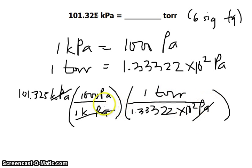Pascal cancels out, leaving us with the unit in torr. Doing the mathematics here using a calculator, we get 760.002 torr.